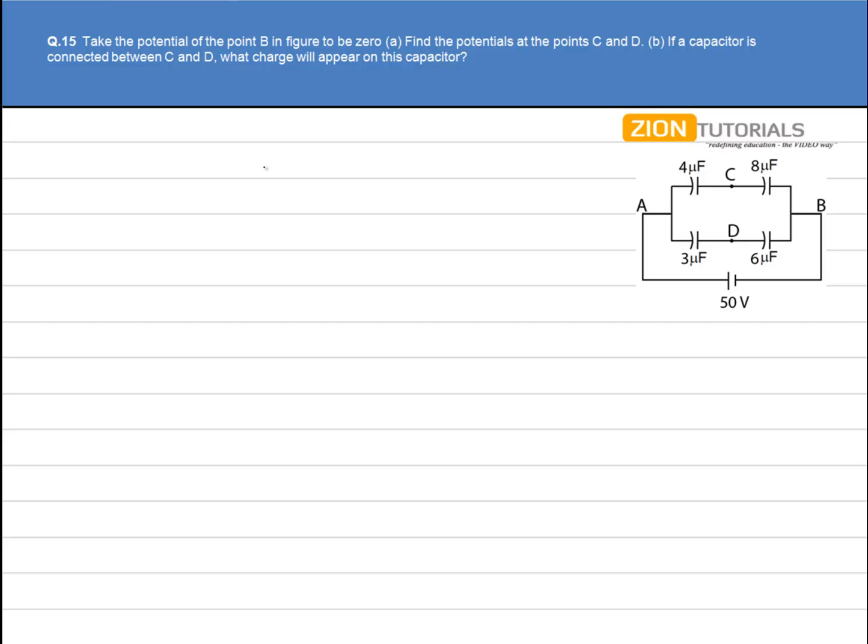The potential at point B in the figure is zero. We have to calculate the potential at point C and D. To calculate the potential, we have to first calculate the charges on each of the capacitors.